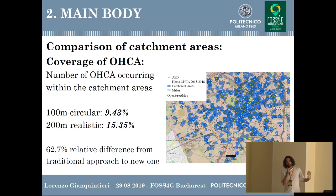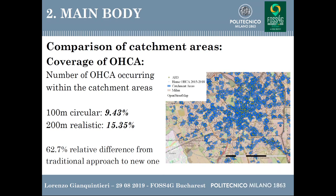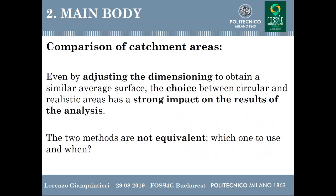What are catchment areas needed for? Quality assessment means determining how many arrests we can cover. If we consider the circular areas, we can cover 9.43% of the arrests, whereas with the realistic areas we cover 15.35% — despite the mean area being quite similar. We conclude that the two mapping techniques, even when adjusting the dimensioning, are not equivalent. We need to inspect more in detail and decide case by case which technique is more suitable.